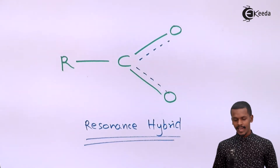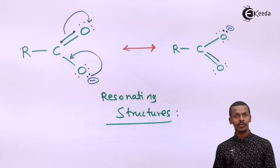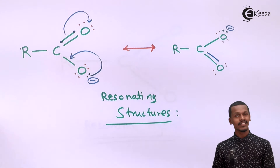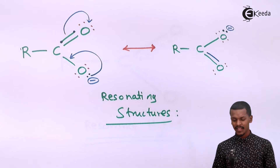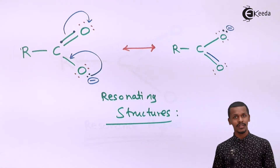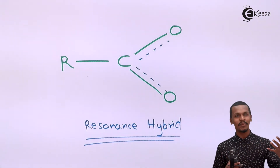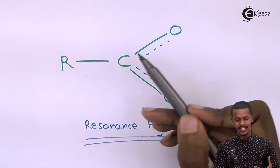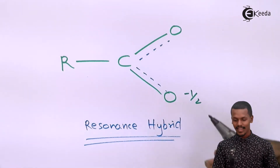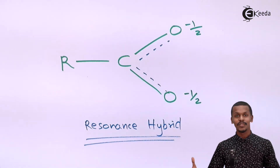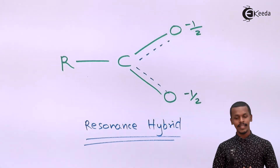In both resonating structures, the negative charge is on either one oxygen. In the resonance hybrid, the electrons are distributed — shifting from one oxygen to the other — so each oxygen acquires a charge of −½. This is the charge distribution in the resonance hybrid.